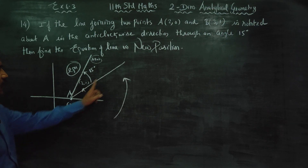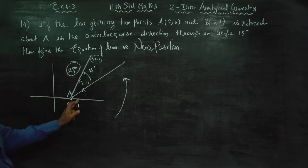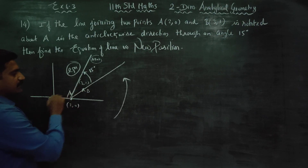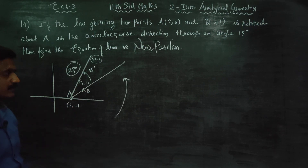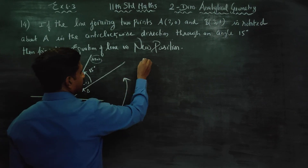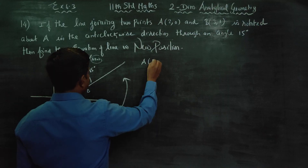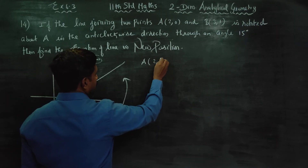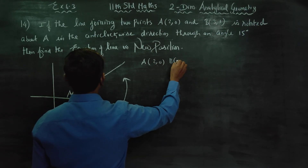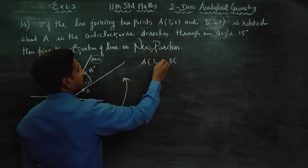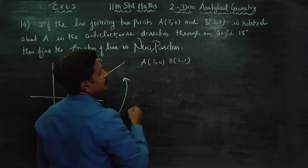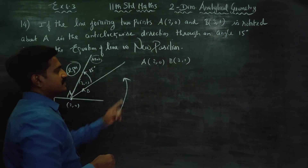The original line passes through A and B. A point is (2, 0) and B point is (3, 1).